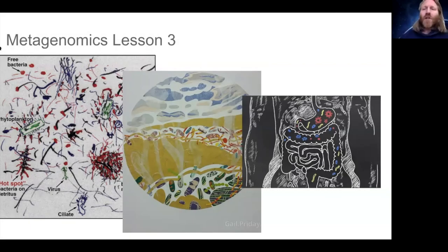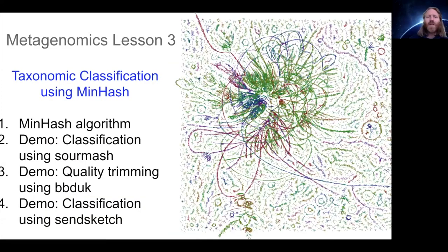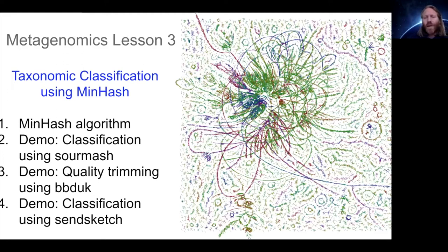Welcome everyone to metagenomics lesson three. Today we're going to talk about taxonomic classification again using an algorithm called MinHash, and then we'll run through a demo using a program called SourMash to do some MinHash taxonomic classification on genomes and metagenomes. We'll also run through a bit more about quality trimming using the BBDuke program and BBtools, then wrap it up with testing another classification program called SendSketch, which is also in the BBtools.